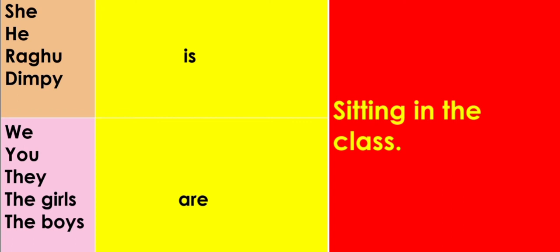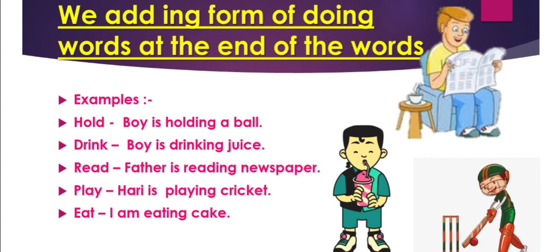So, with this table you can understand where we can use am, is, and are. Now, -ing form. We add -ing form of doing words at the end of the words. -ing form of doing words means something what is doing now. Something what we are doing now. What is happening now. Jo abhi ho raha hai. Woh show karta hai -ing form of doing words. Koi kaam hum abhi kar rahe hai. Woh -ing form of doing words se pata chalta hai.